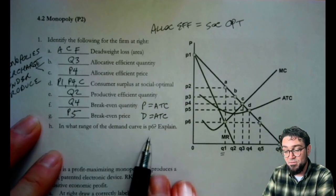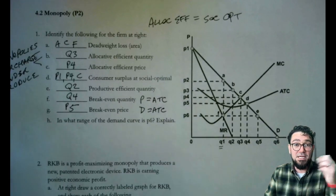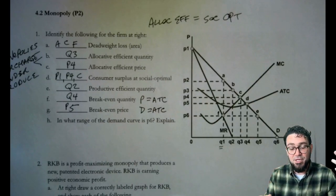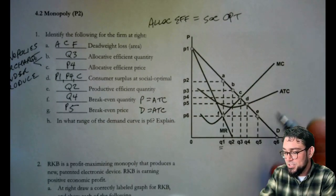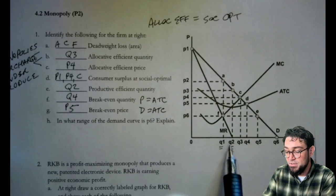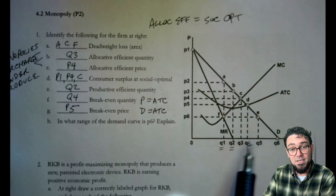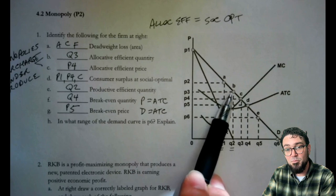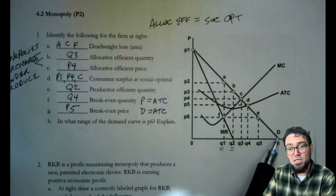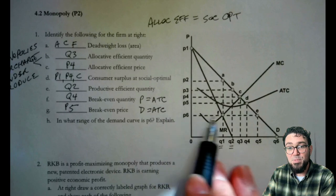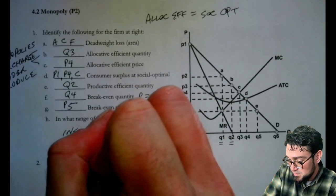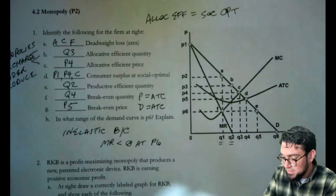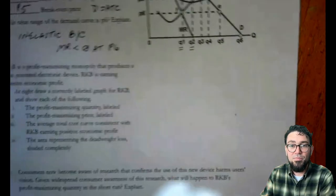And then last, it says, in what range of the demand curve is P6? Explain. So when we talk about ranges of a demand curve, we're saying elastic, inelastic, or unit elastic. The midpoint of the demand curve is the unit elastic point. The upper range of the demand curve is the elastic and the lower range is the inelastic. And we actually know that's true because it crosses over when MR is equal to zero. Where MR crosses, that's actually where the demand curve becomes inelastic. So all the quantities below Q2, from Q2 to Q1 and all the way to zero, all of these points up here on the demand curve from point B to P1 are all in the elastic range. From point B on down is the inelastic range. So it says P6, that corresponds to point E. So I would say inelastic, and my explanation can simply be because MR is less than zero at P6. I know that it's less than zero because that MR would continue on.